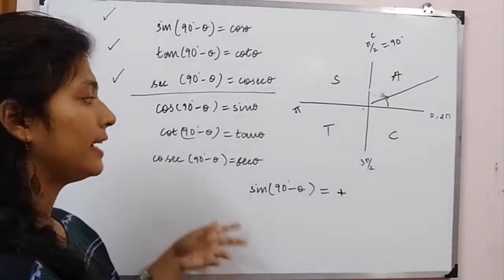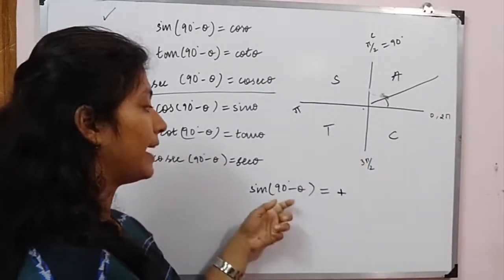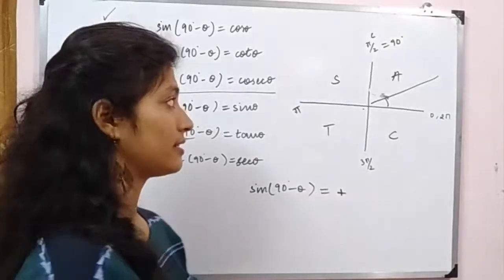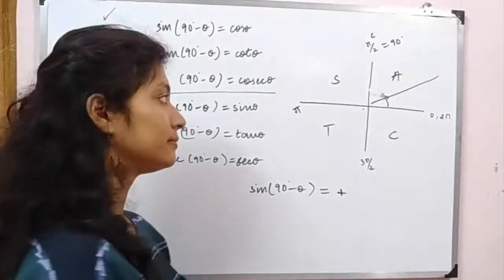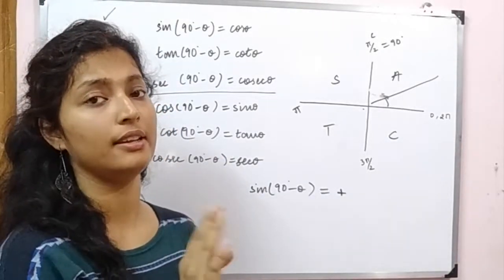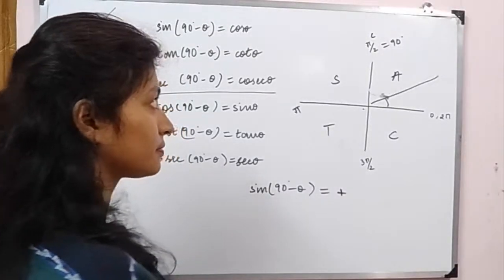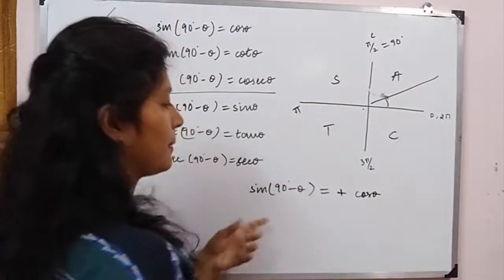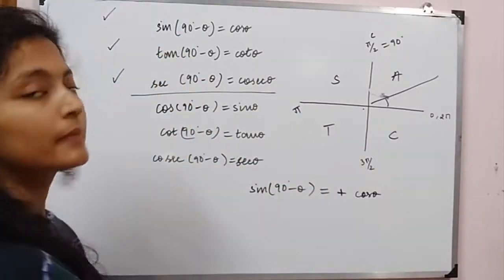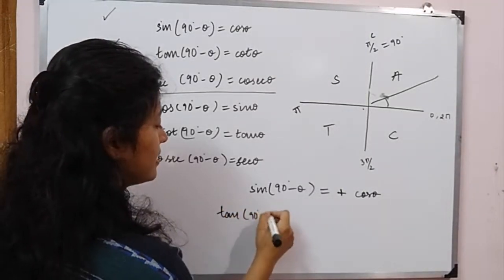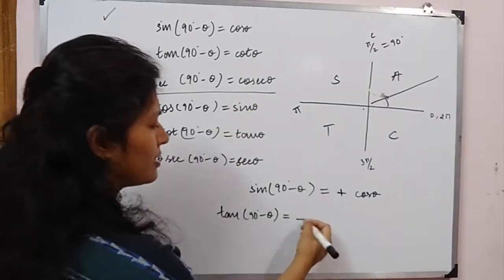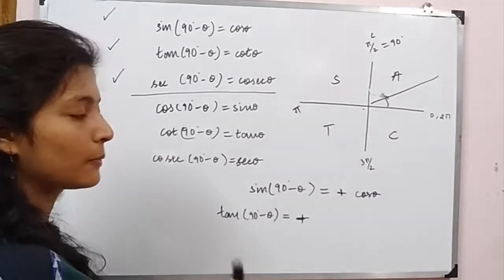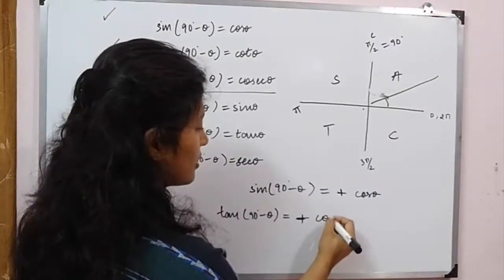The answer will be positive. Now, sin 90 means the vertical axis. When there is a vertical axis, there is a change. The change on the vertical axis gives cos theta. Now tan(90° − θ): in the first quadrant the answer is positive, and on the vertical axis, tan changes. So tan can change to cot theta. That is the answer.